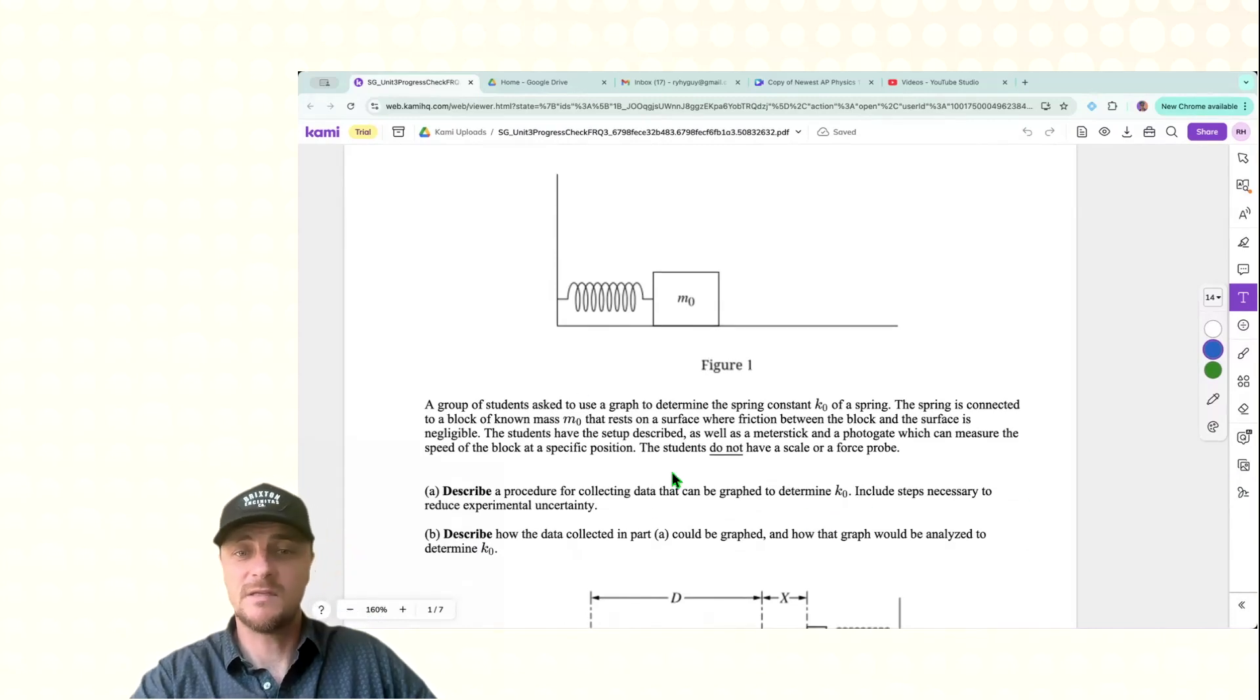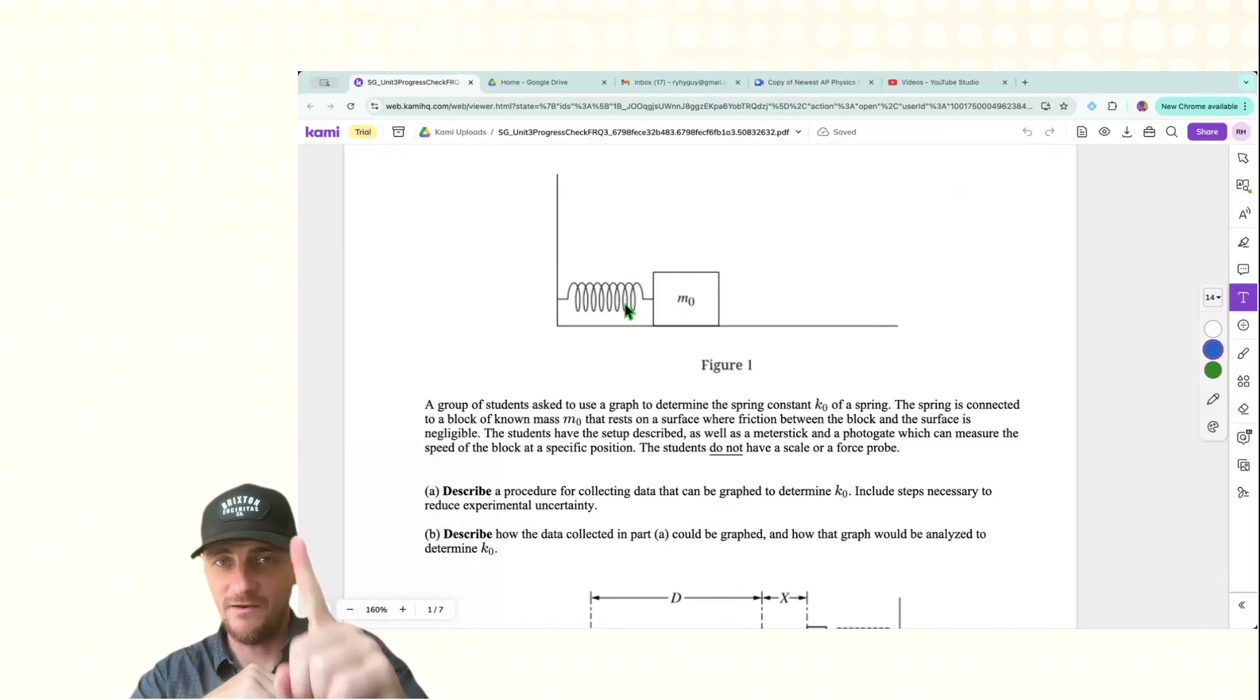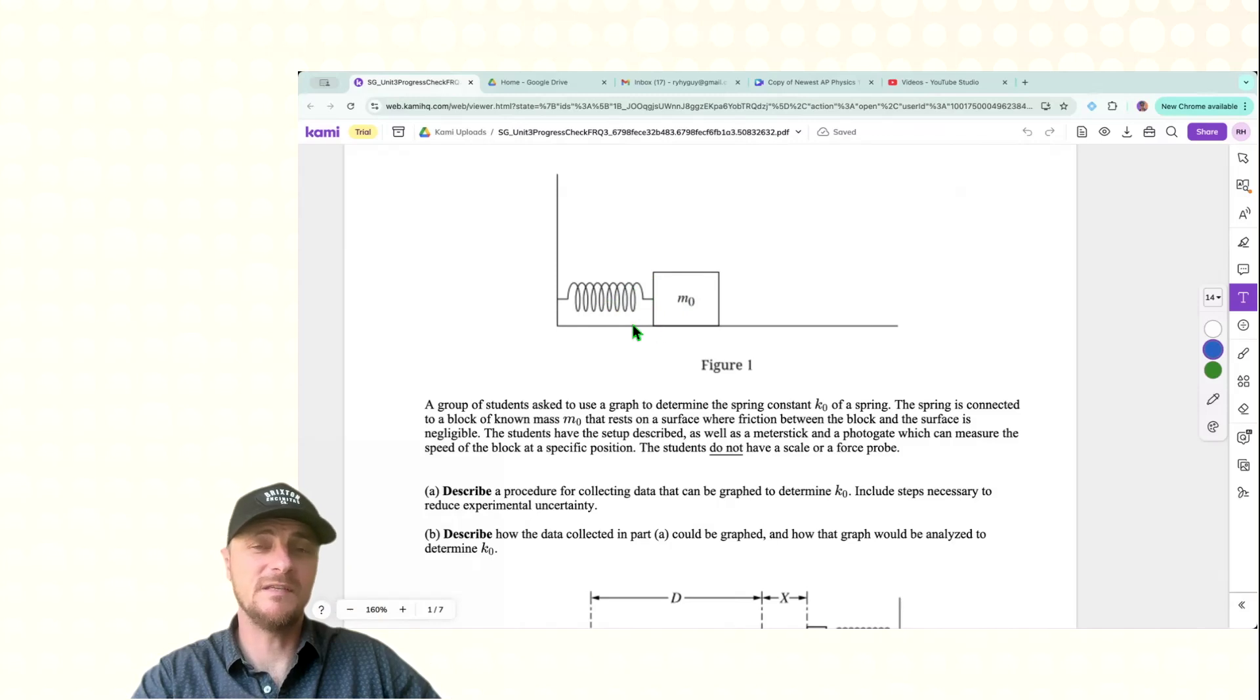Go ahead and pause this, take a look at it. But basically, we need to develop a procedure with this system to find the spring constant of this spring. For Part A, here's Step 1. Put a photogate at equilibrium. Step 2. Compress the mass in spring and measure the distance of compression. Record that distance.